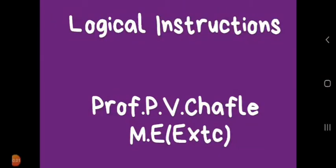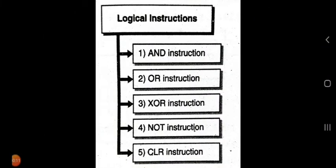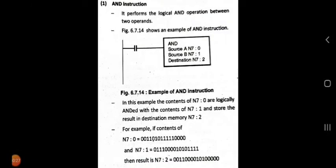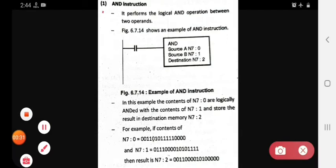Hello students, today we see the topic that is logical instructions in PLC. So see one by one logical instructions. The logical instruction has five types: AND instruction, OR instruction, XOR instruction, NOT instruction, and CLR means clear instruction.